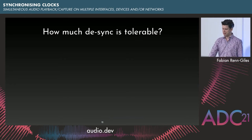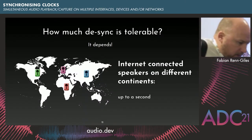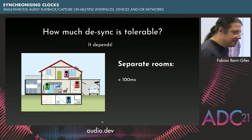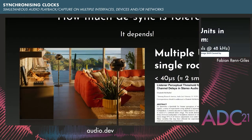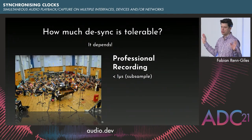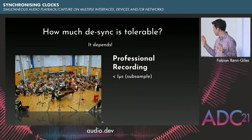As all good questions in life, it depends. If we have several speakers distributed throughout the world, up to a second is okay. If they're in different rooms but in the same home, maybe 100 milliseconds is okay. In the Sing case, where they're in a single room, research has shown that even lay people can hear around 40 microseconds of audio desynchronization — that's just two samples at 48k. To be safe, the Sing cell alpha has a synchronization accuracy better than five microseconds. The recording side is even more stringent because the largest tolerable error is around one microsecond.